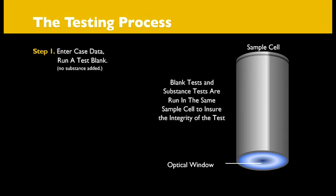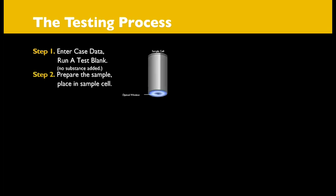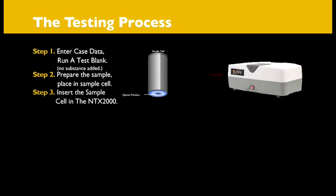Now that we know how the drug analyzer works, let's take a look at the testing process. A blank is run on the drug analyzer to ensure that the solvent and supplies that are going to be used to handle the unknown sample are clean and free of any contamination. The sample cell has a clear optical window that allows for the direct application of light. The sample is prepared and placed into the sample cell.